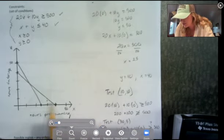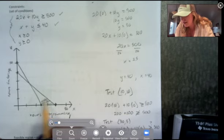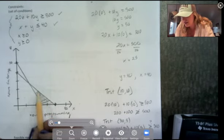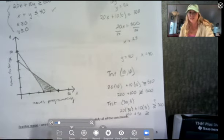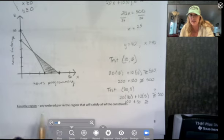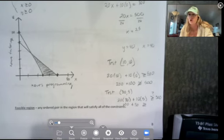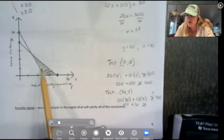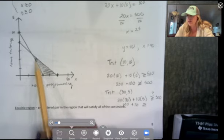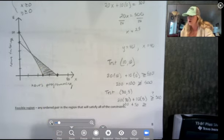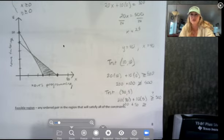So what this means you guys, the feasible region is what this is called, but any ordered pair in that region will satisfy all of our constraints. So any combination in here will make her more than $500 or at least 500 and she will work no more than 40 hours. So any combination in here will work. And that's it for this video guys. Thanks for watching.